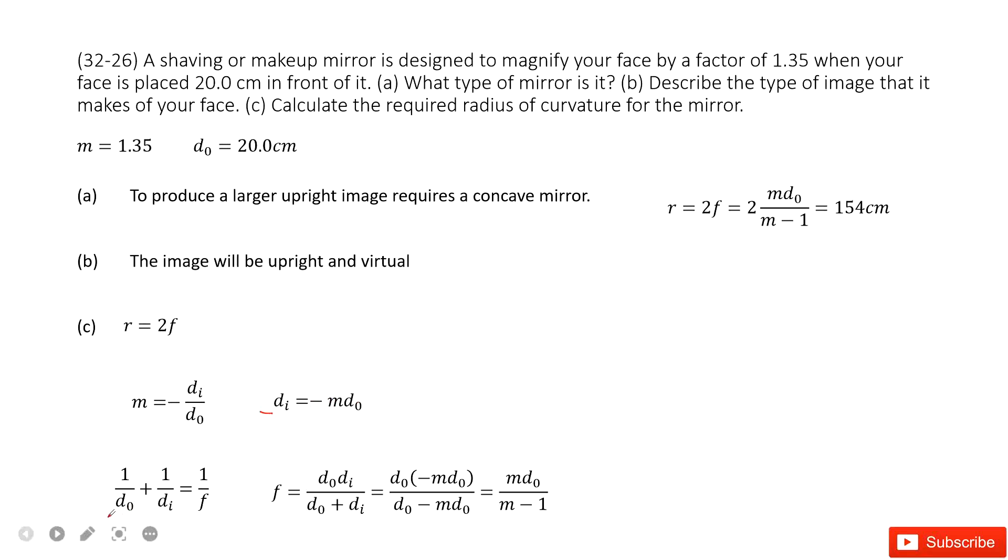Now we have an equation to connect do (object distance), di (image distance), and f (focal length) in one equation. Converting this equation, we can get a function for the focal length.